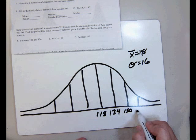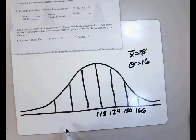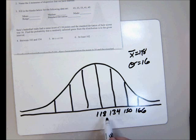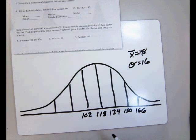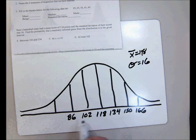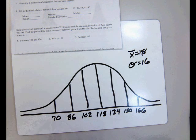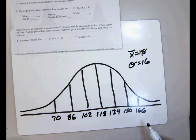and then 166. Then to go to the left, we're going to subtract 16. So our first one is 102, 118 minus 16. Our next one is 86, and then the last one is 70. So we have our number line filled out.